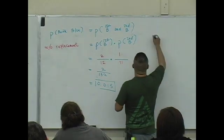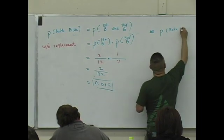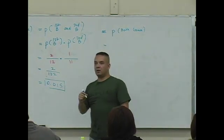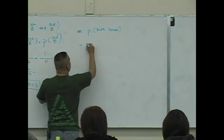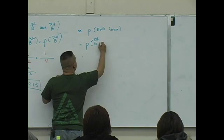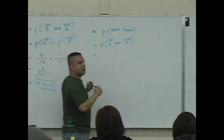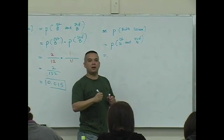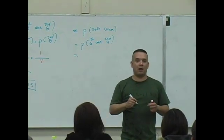Let's do another one — the probability they are both green. What does that look like? Well, what does it mean for both to be green? Isn't that the first is green and the second is green? You guys with me on that? What does the multiplication rule say? How do you know that you use the multiplication rule here?